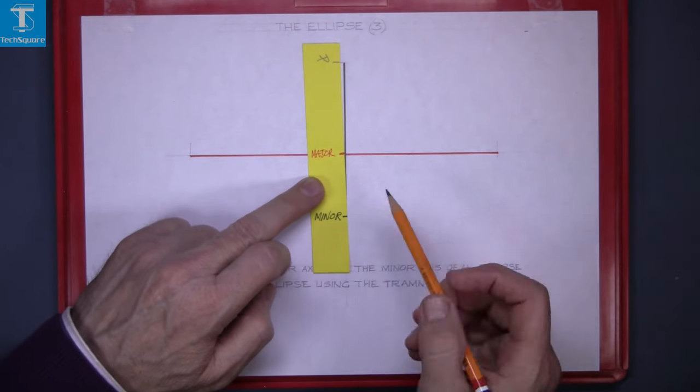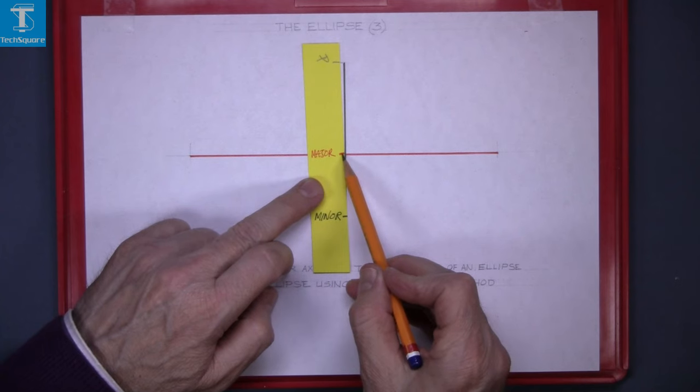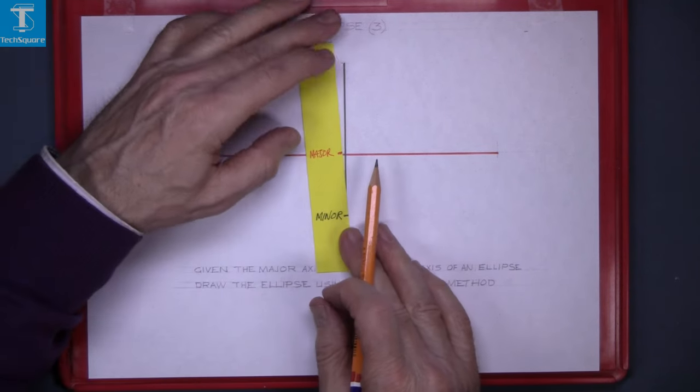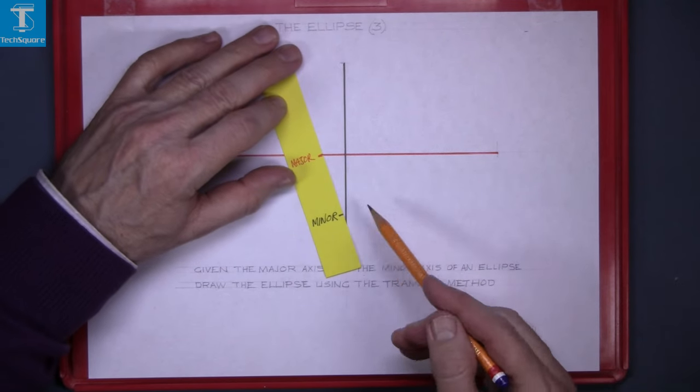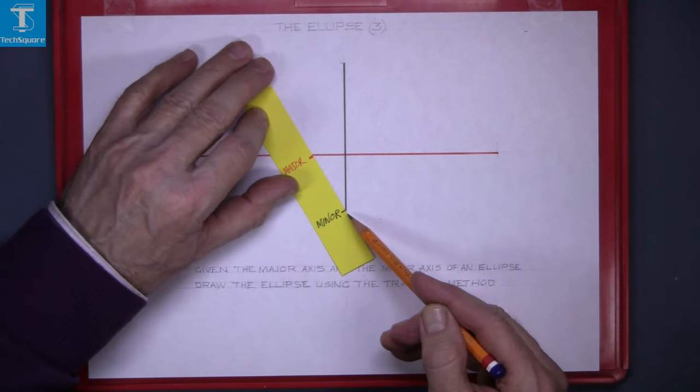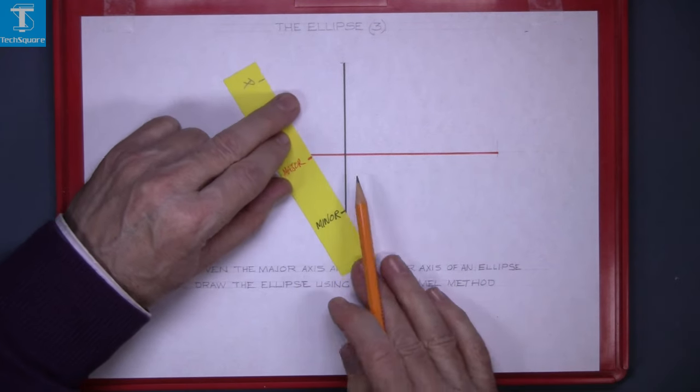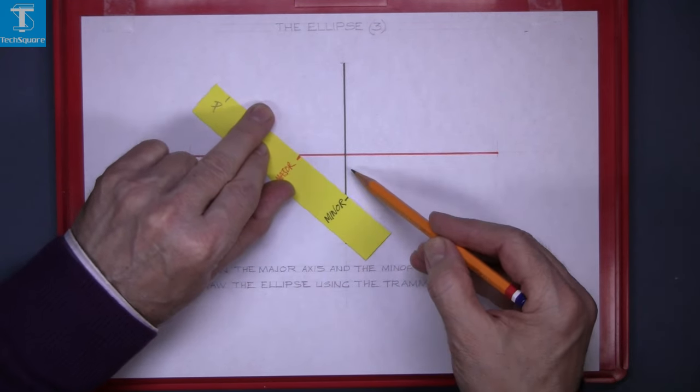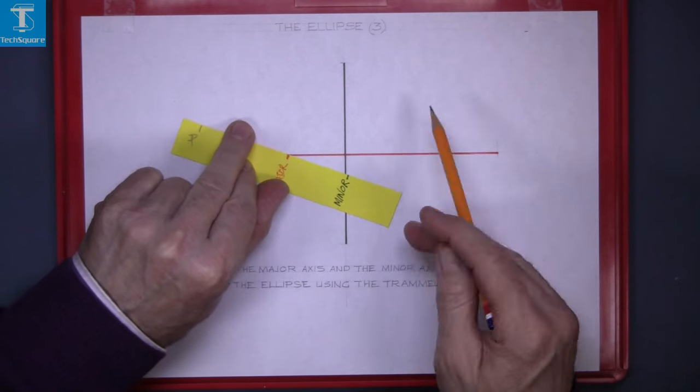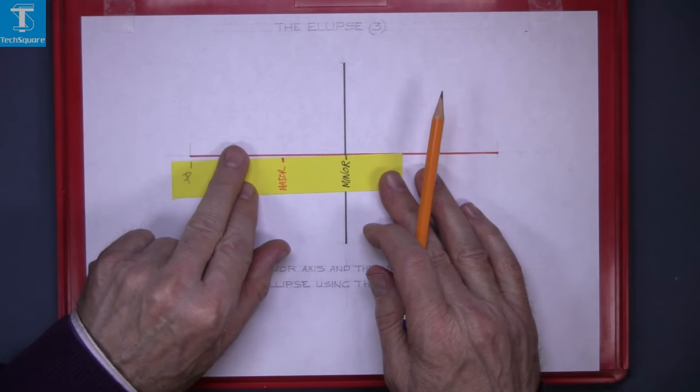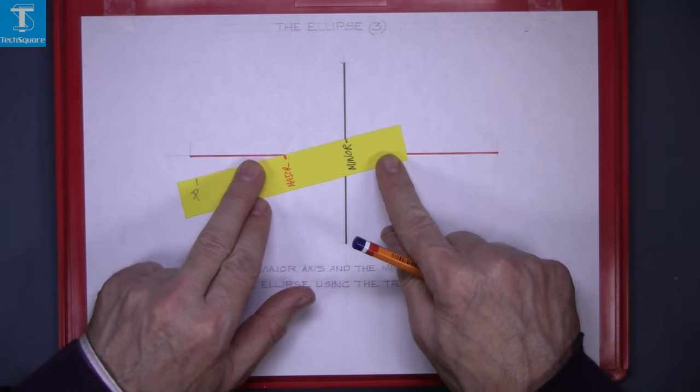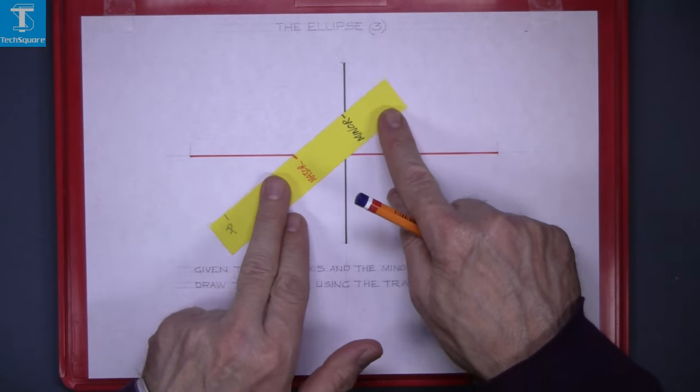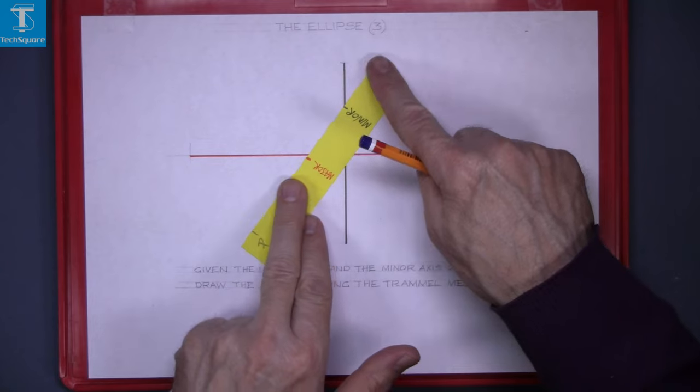Now rotate the trammel so that the major axis point stays on the major axis and the minor point stays on the minor axis. These two points must stay on the axes. So when you get to there, the minor point goes up the minor axis and you continue right around the ellipse.